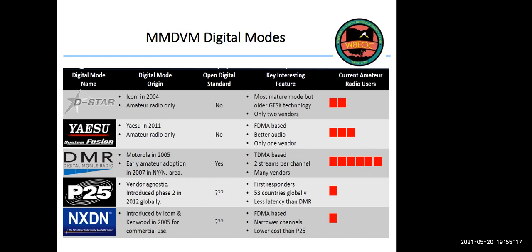You can go to a hamfest and buy DMR equipment for VHF and UHF. If you have the right programming tools, you can move it into the amateur bands if the correct filters are in it. DMR handhelds are coming down in price — you can buy a new one under a hundred dollars. The one I'm using I bought from DX Engineering and paid about $180 for it.